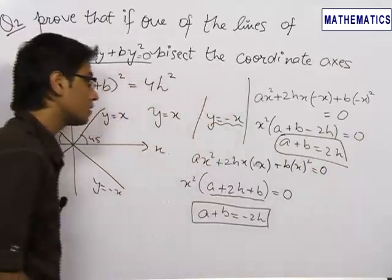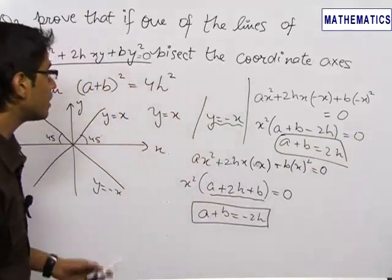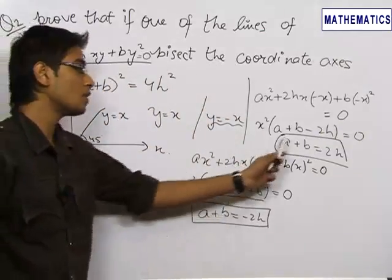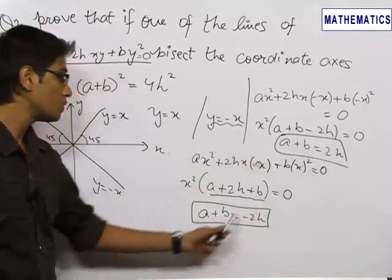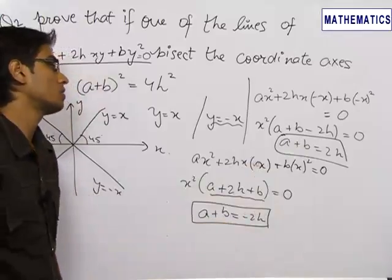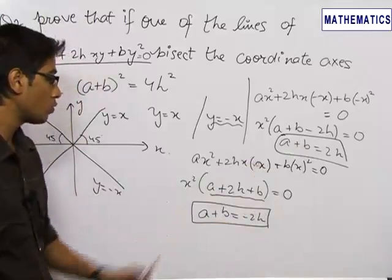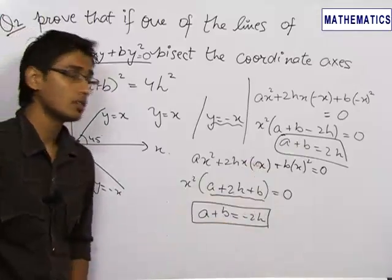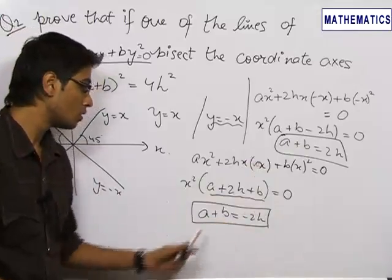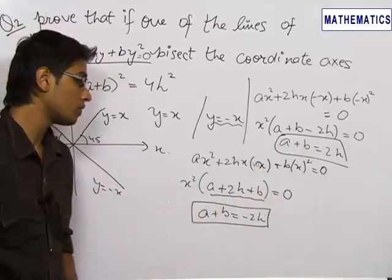So we see that in both cases, either A plus B equals 2h or A plus B equals minus 2h. On squaring both sides we get (A plus B) whole square equals 4h squared, which is the desired result we needed to prove.